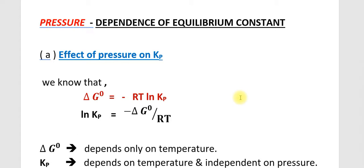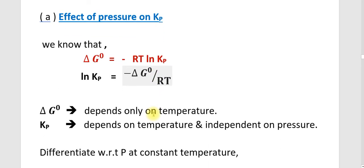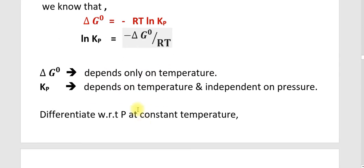The next topic is the pressure dependence of the equilibrium constant. The first dependence — temperature dependence — has already been discussed. Now we are discussing the pressure dependence of the equilibrium constant. First, we are finding out the relationship between pressure and Kp. We know that delta G° equals minus RT Ln Kp, or Ln Kp equals minus delta G° by RT. Here, delta G° depends only on temperature, and Kp also depends only on temperature and is independent of pressure.